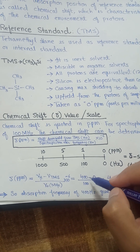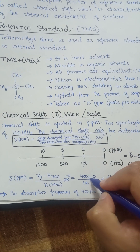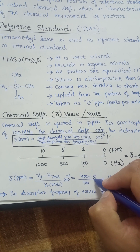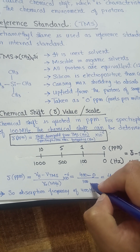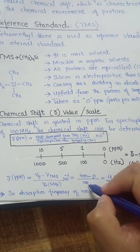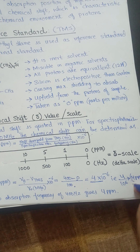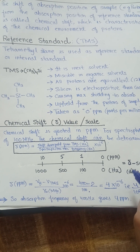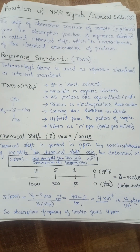For example, suppose we have a proton frequency at 400 Hz downfield from TMS. Then δ = 400 / 100 MHz × 10⁻⁶ = 4 ppm for a 100 MHz instrument. If the instrument is 400 MHz, divide by 400; if it is 60 MHz, divide by 60. In this way we get the delta value in parts per million. Thanks for watching.